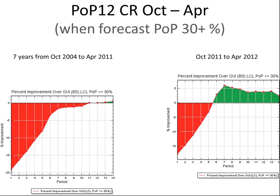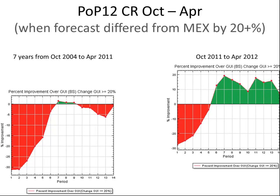Here are situations where we forecast at least a 30 POP. In the past we were slightly worse than guidance or about a tie, especially as you got out to day six and seven. There has been a lot of discussion about us having lots of high POPs in the extended, but I think that has only served to improve our verification based on these numbers.